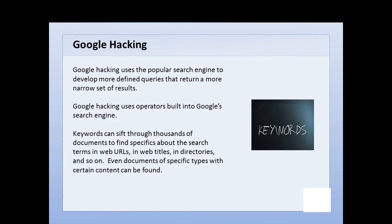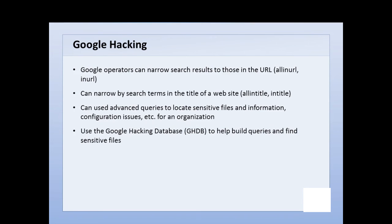There are a couple of operators we'll talk about: allinurl and inurl. allinurl means every single URL returned has all of those typed terms. You can narrow it down to just some of those terms by saying inurl. There's also allinurl and intitle. allinurl basically gives you the entire search term located in the URL of the website. intitle and allintitle search within the title of the website — allintitle requires all of the search term in the title, while intitle allows parts of the search term.